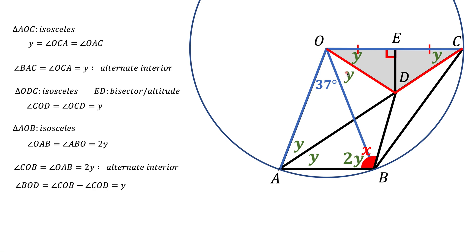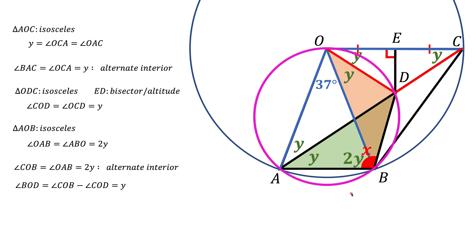Now let's look at triangle ODB and the green triangle ADB. These two triangles share side BD, and the angles opposite that side are both equal — they're both the white angle Y. When two triangles share a side and have equal opposite angles, points O, D, B, and A all lie on a circle. Therefore, quadrilateral ODBA is an inscribed quadrilateral.